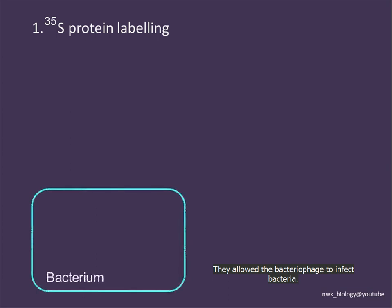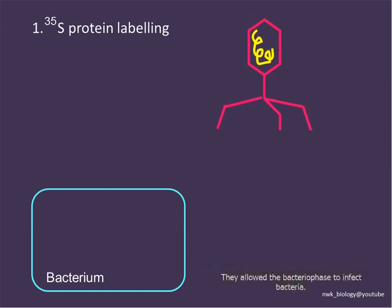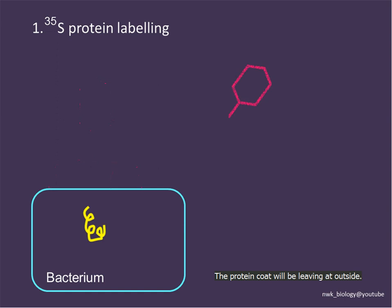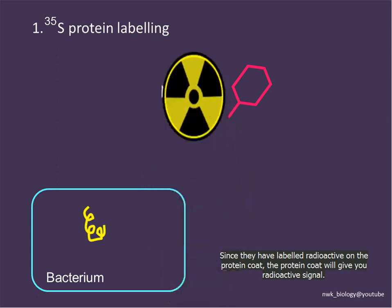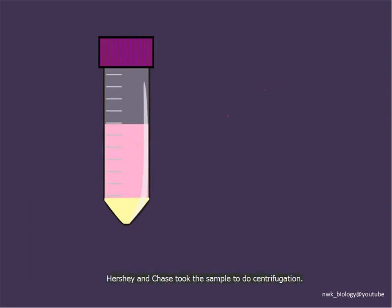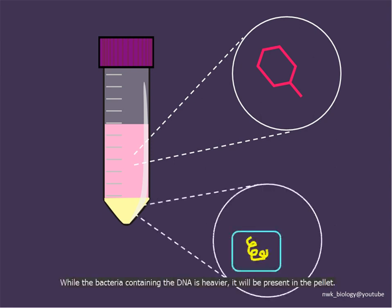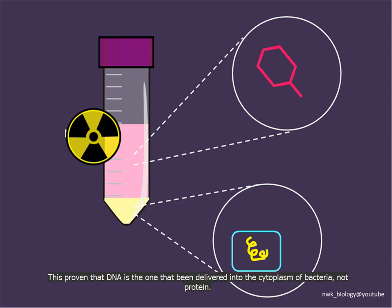They allowed the bacteriophage to infect the bacteria. In the experiment where the protein coat was labeled with radioactive signal, when bacteriophage infects bacteria, it delivers the hereditary material into the cytoplasm of the bacteria, while the protein coat is left outside. Hershey and Chase took the sample for centrifugation. Since the protein coat has lower density, it is present in the supernatant, while the bacteria containing the DNA is heavier and present in the pellet. The radioactive signal was detected in the supernatant, proving that DNA — not protein — is delivered into the bacterial cytoplasm.